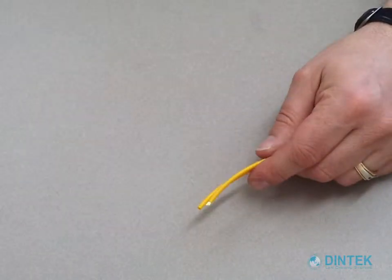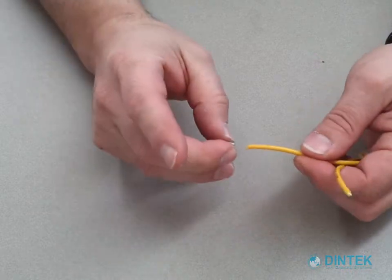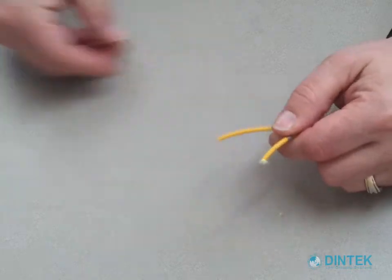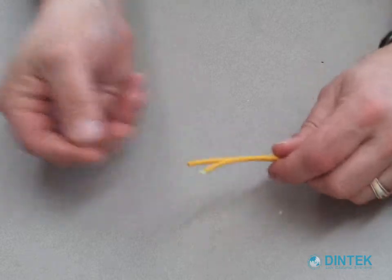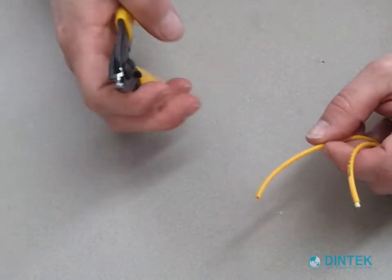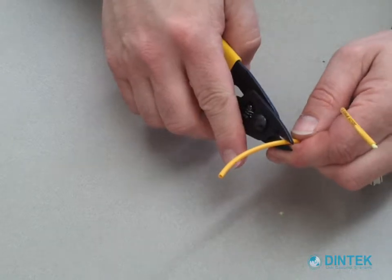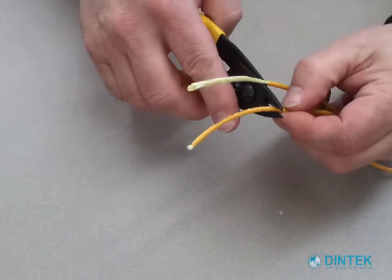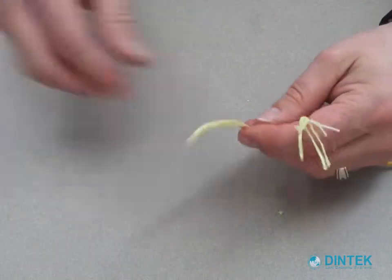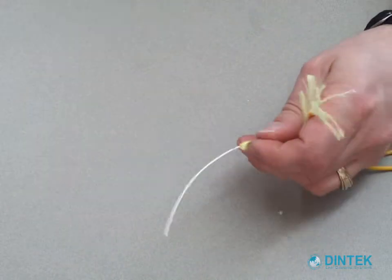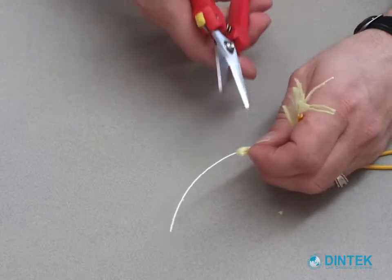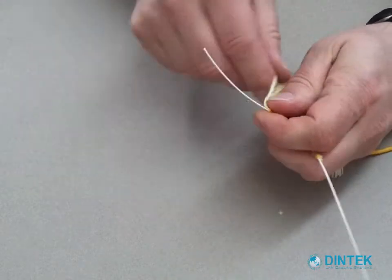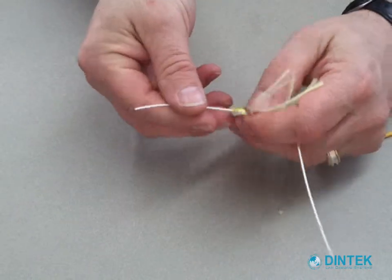So firstly, we need to take our two fibers and put our crimps on. After that we need to strip off about 60 mils of the zip cord sheathing. Once we have done that, we take the Kevlar and move that out of the way. Grab our cutters and cut away the Kevlar.